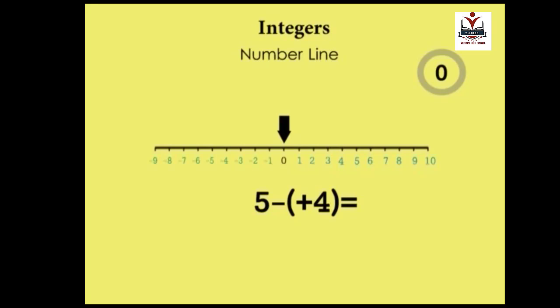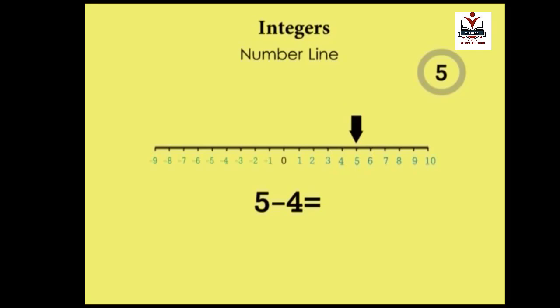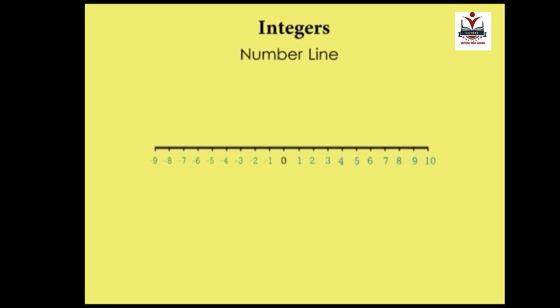What if we had 5 minus plus 4? Remember, a plus in front of a number is often silent, so this can be written as 5 minus 4. Generally, when a positive and a negative sign follow each other, irrespective of the order, they can be replaced with a single negative sign.